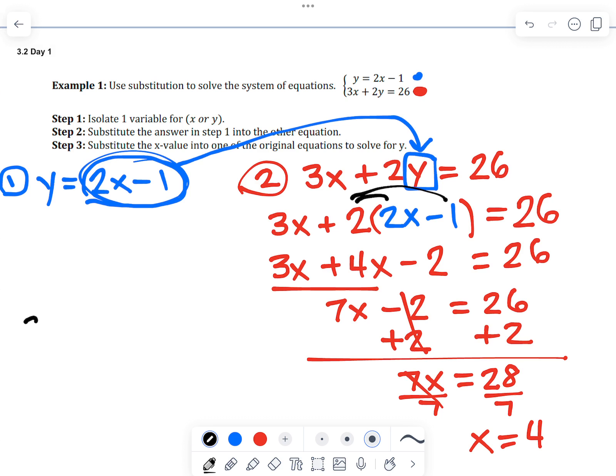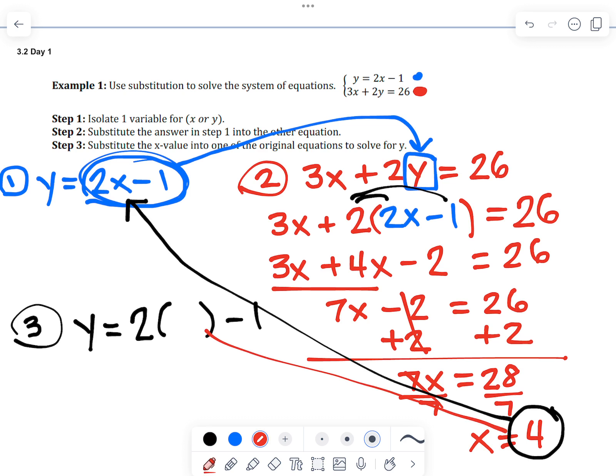Step 3 now says substitute x. We're going to take this x and substitute it back into that first equation. So it's y equals, and now we're going to replace this x right here with 4. So this is going right into here for a 4. And now we simplify it. So y equals 2 times 4 is 8 minus 1 is 7.